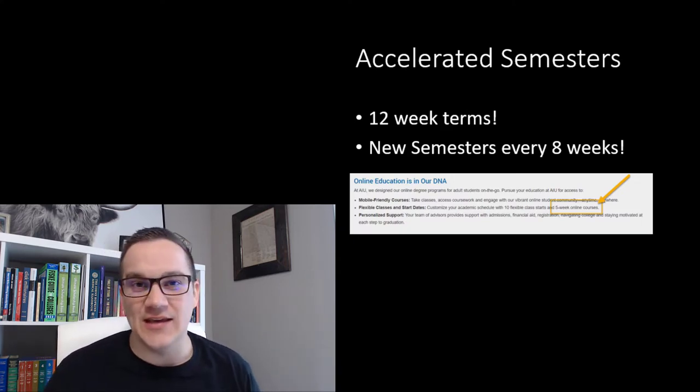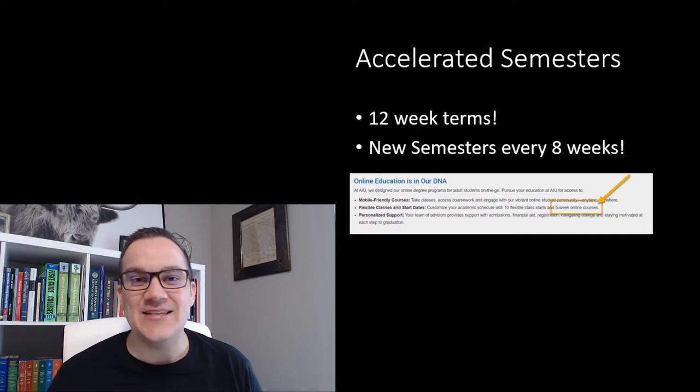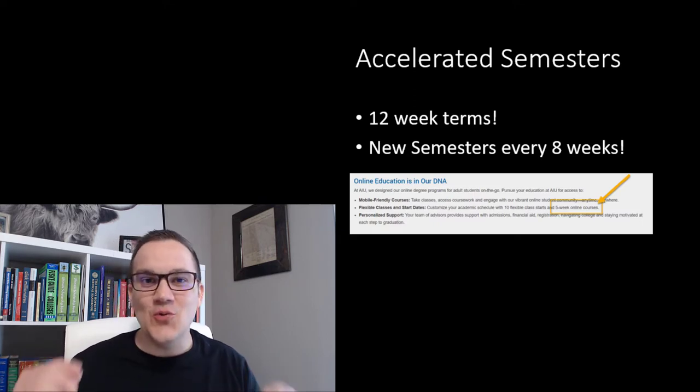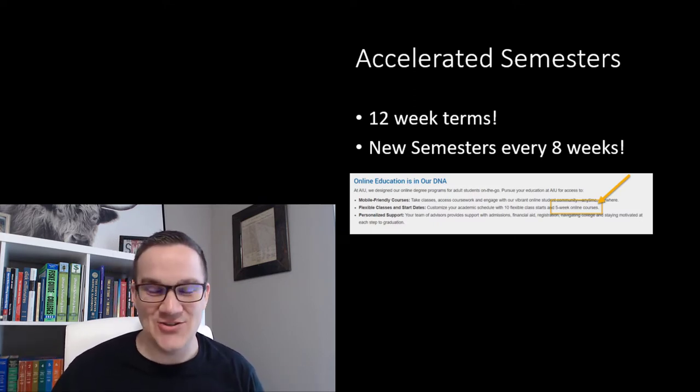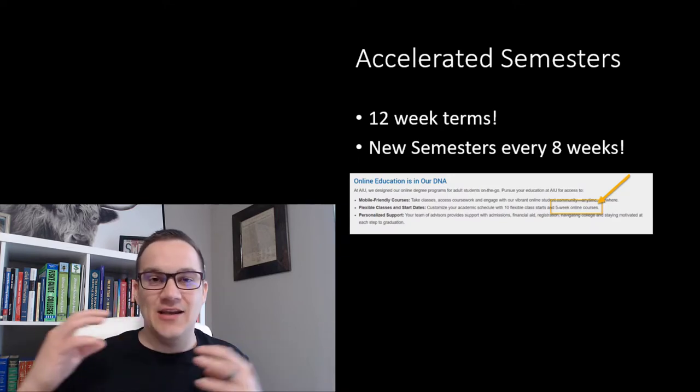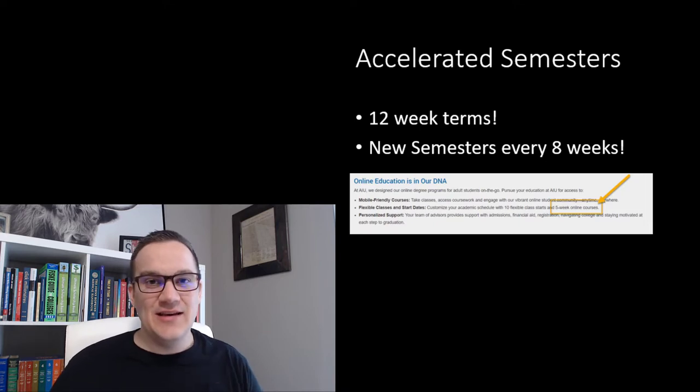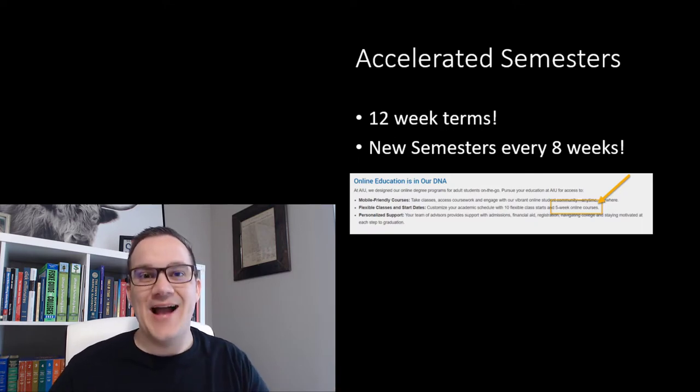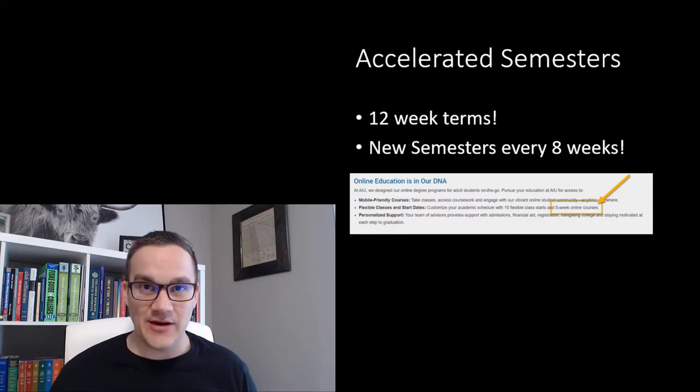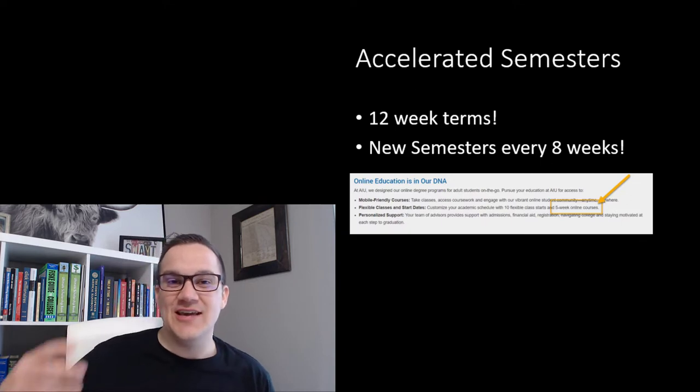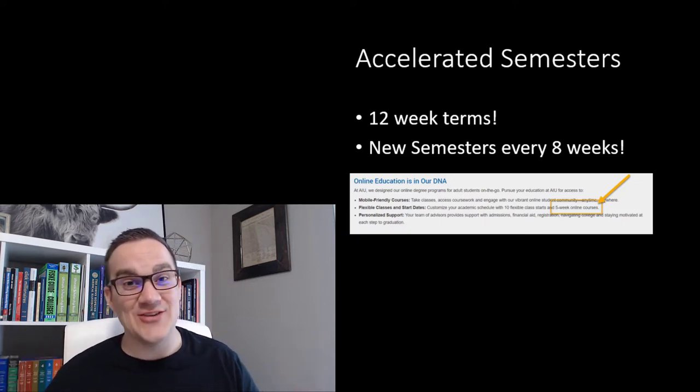The first way is finding a school that offers accelerated semesters. When accelerating a degree, you want to go at your own pace. You don't want anyone holding you back. If you take an exam, pass an exam, get credit for a class, and can move on to the next class, it doesn't matter if you pass that exam in one day, one week, one month. It's at your own pace. Now, a lot of schools, a lot of universities offer accelerated programs, and they say we have 12-week semesters instead of four-month semesters, so you can graduate faster.